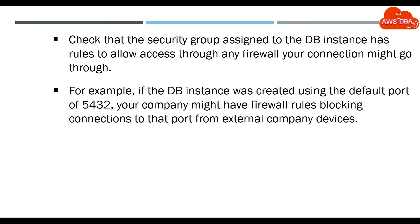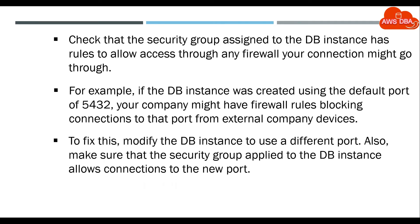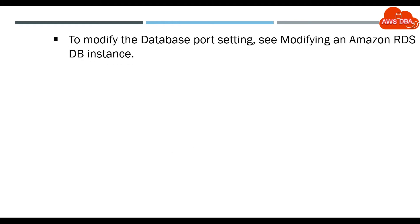For example, if the DB instance was created using the default port of 5432, your company might have firewall rules blocking connections to that port from external company devices. To fix this, modify the DB instance to use a different port. Also, make sure that the security group applied to the DB instance allows connections to the new port. To modify the database port setting, see Modifying an Amazon RDS DB instance.